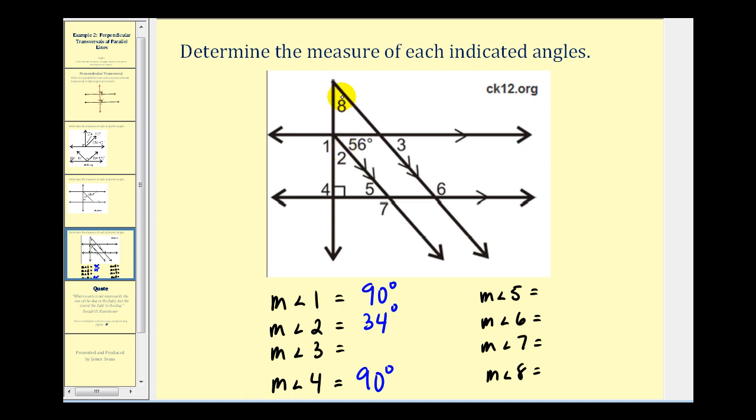Notice that angle two and angle eight are corresponding angles using these slanted parallel lines, and therefore they're congruent or have the same measure here. So angle eight would also be thirty-four degrees.